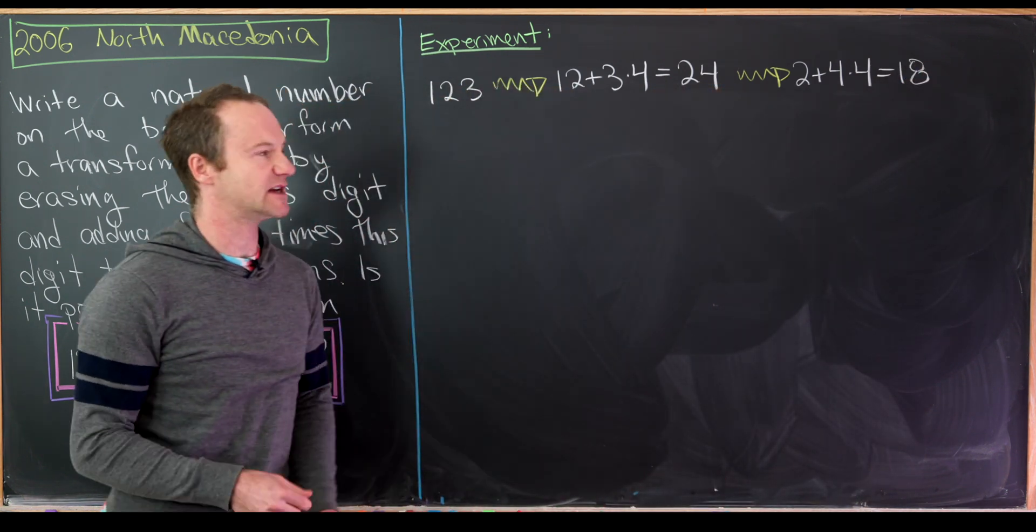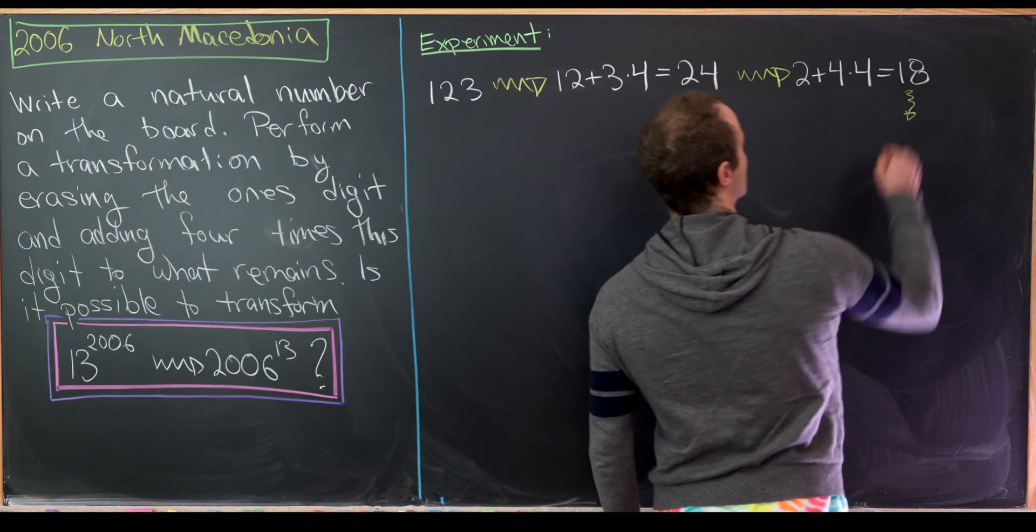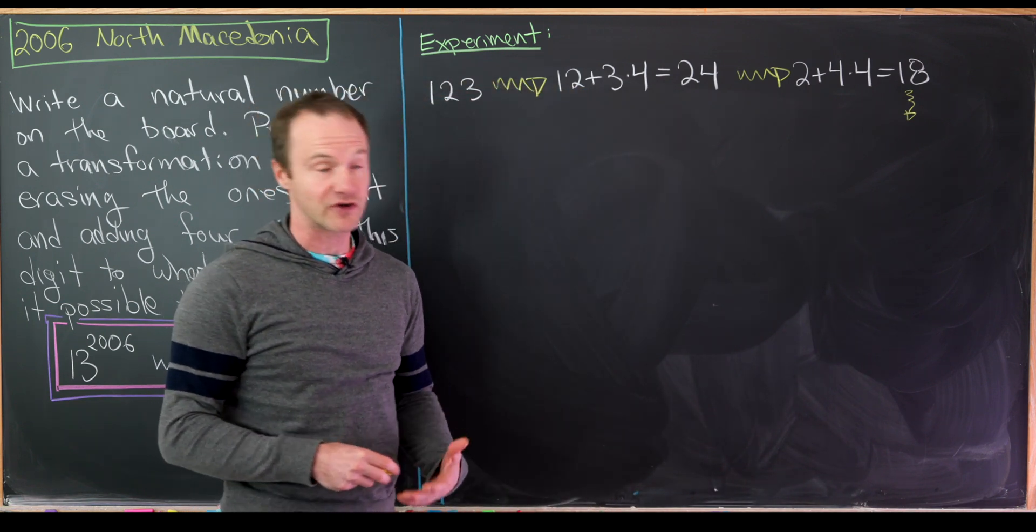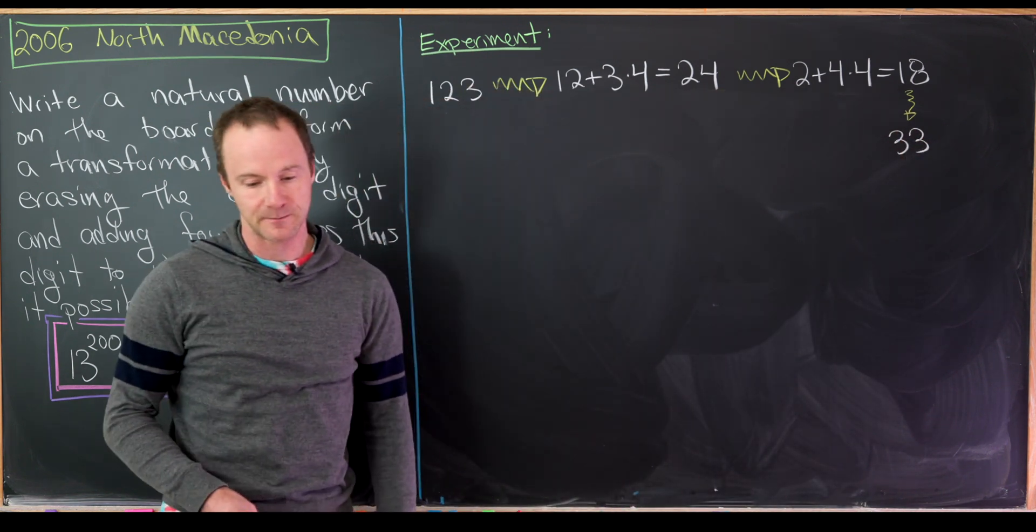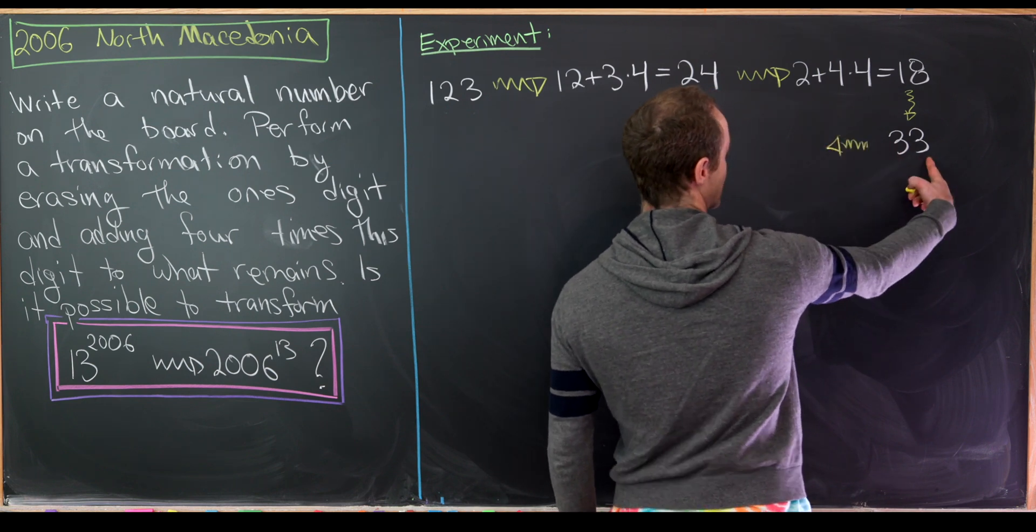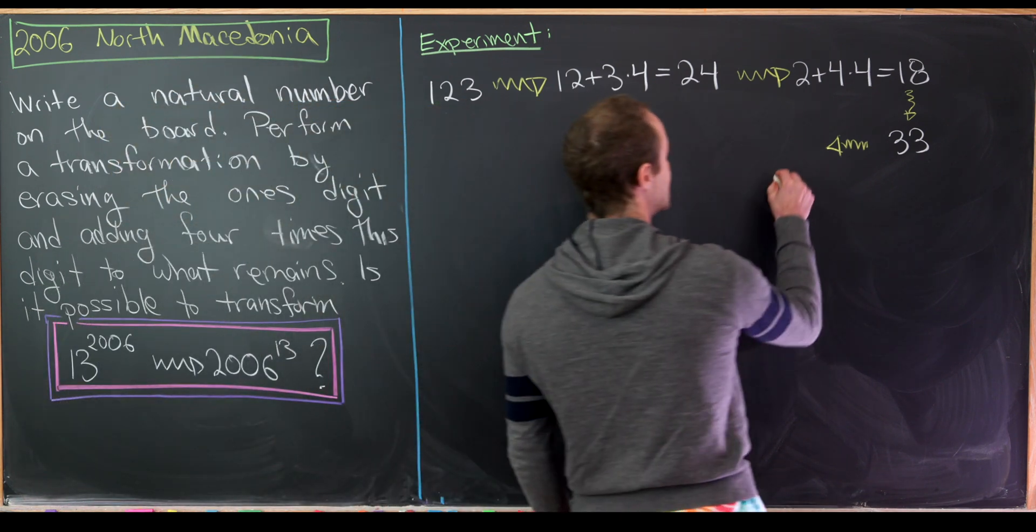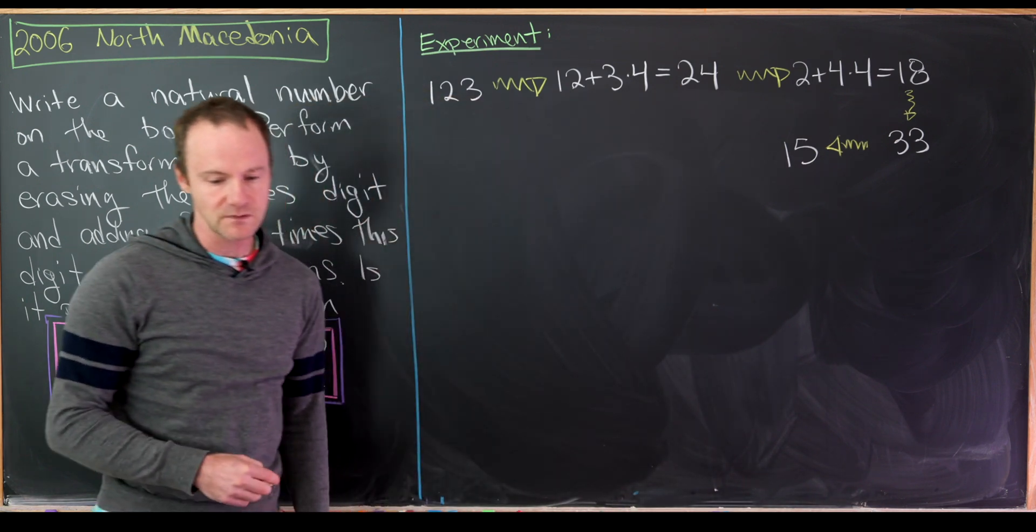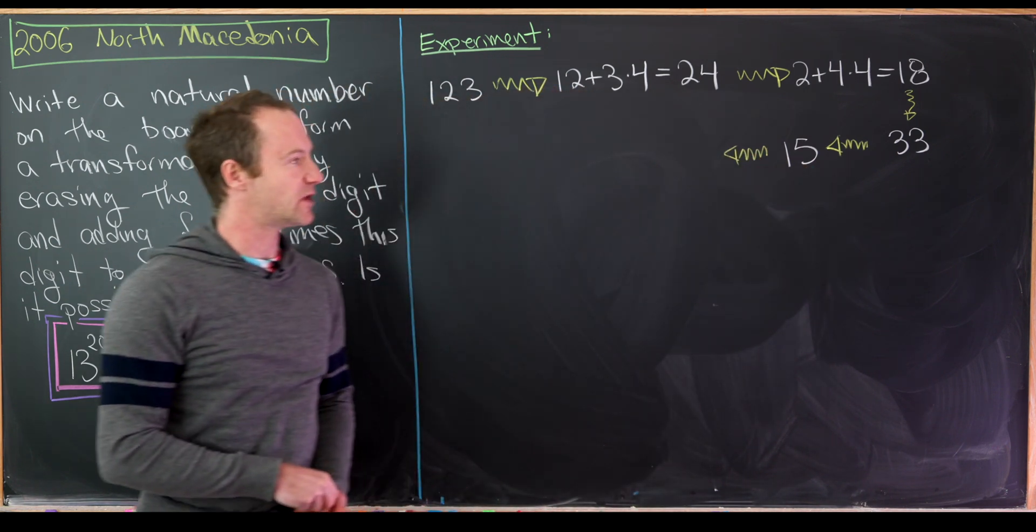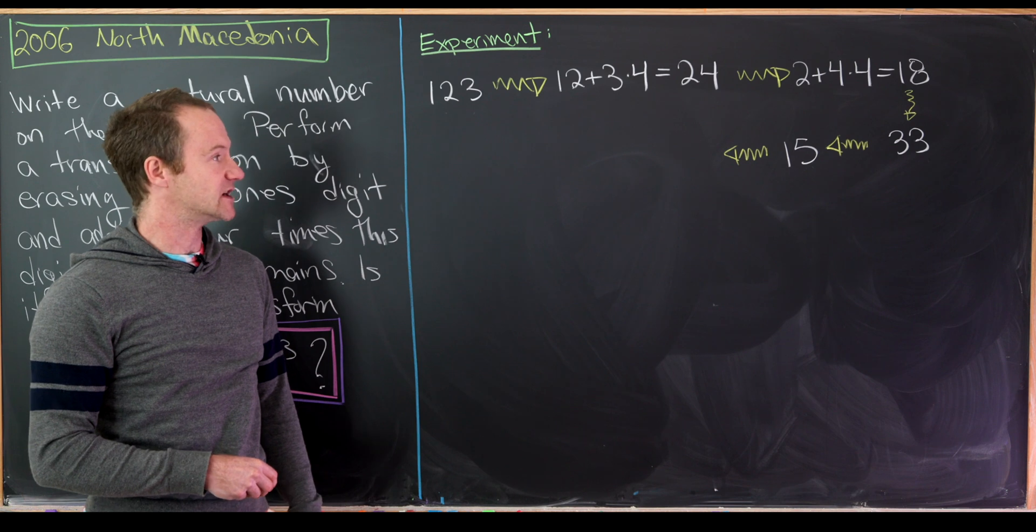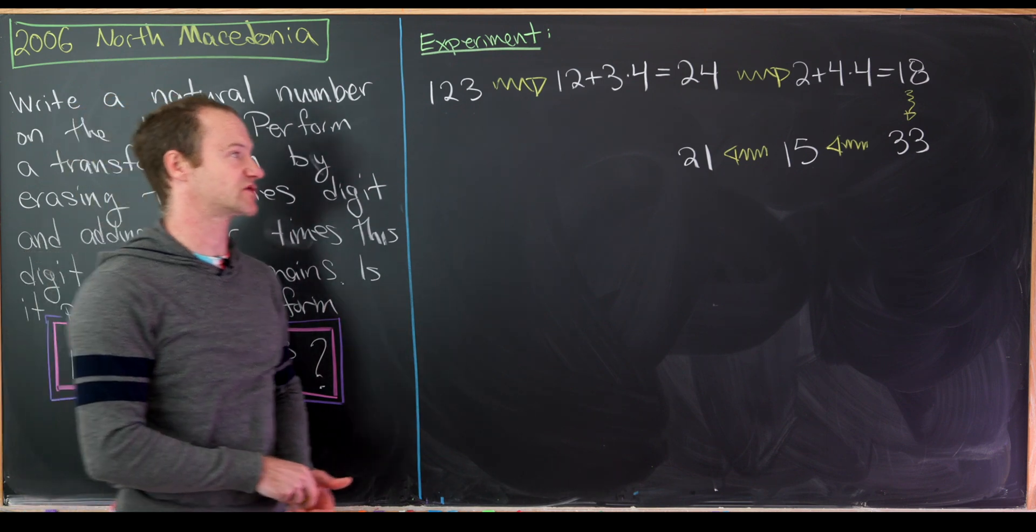I don't think we've seen enough to really see a pattern yet but let's keep going. If we erase 8 and multiply it by 4 we get 32 adding to what remains is 33. Now let's go again. We'll erase 3 the ones digit, multiply it by 4 that gives us 12, add it to the remaining 3 that gives us 15. Next we'll erase 5, multiply it by 4 that gives us 20, added to 1 is 21.